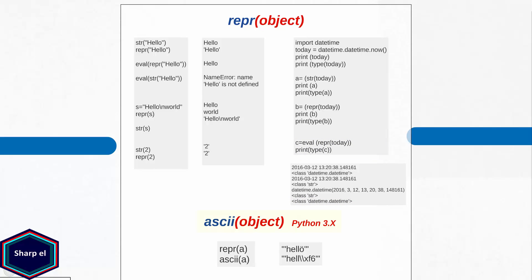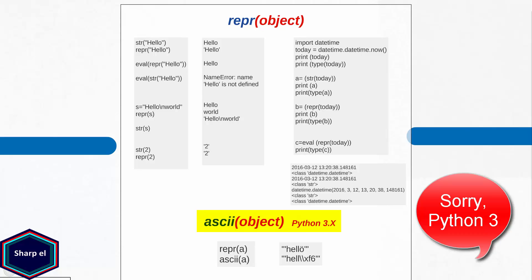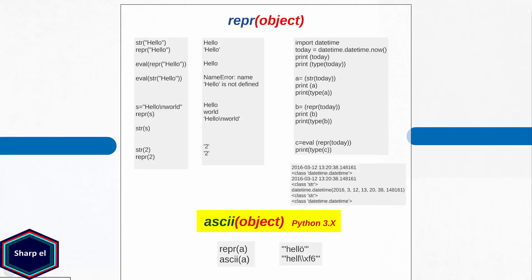Now let's move to our last built-in function: ascii. The ascii function is very similar to the repr function and is only available in Python 3. Like repr, ascii returns a string object as output but escapes non-ascii characters, as you can see in this example. I hope now you understand all the functions we have discussed in this tutorial.